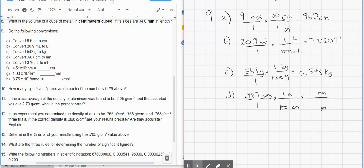How many nanometers are in one meter? The answer is a billion — that's 1 with nine zeros. There's a billion nanometers in one meter. Two of those zeros cancel with the 100 centimeters-per-meter conversion, leaving seven zeros. So we move the decimal seven places to the right, giving us 9, 8, 7 with four zeros nanometers. That's our final answer for D.